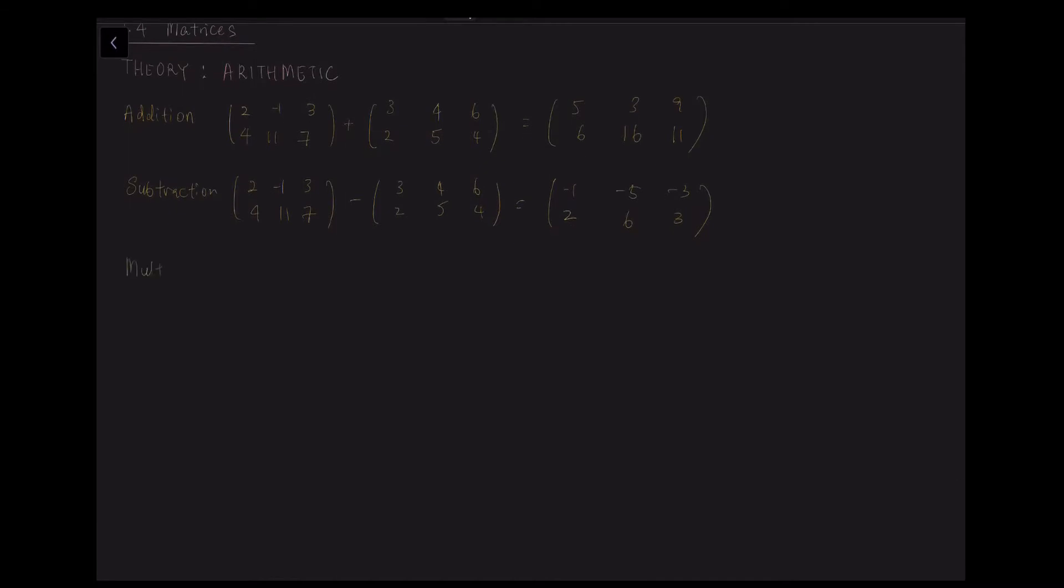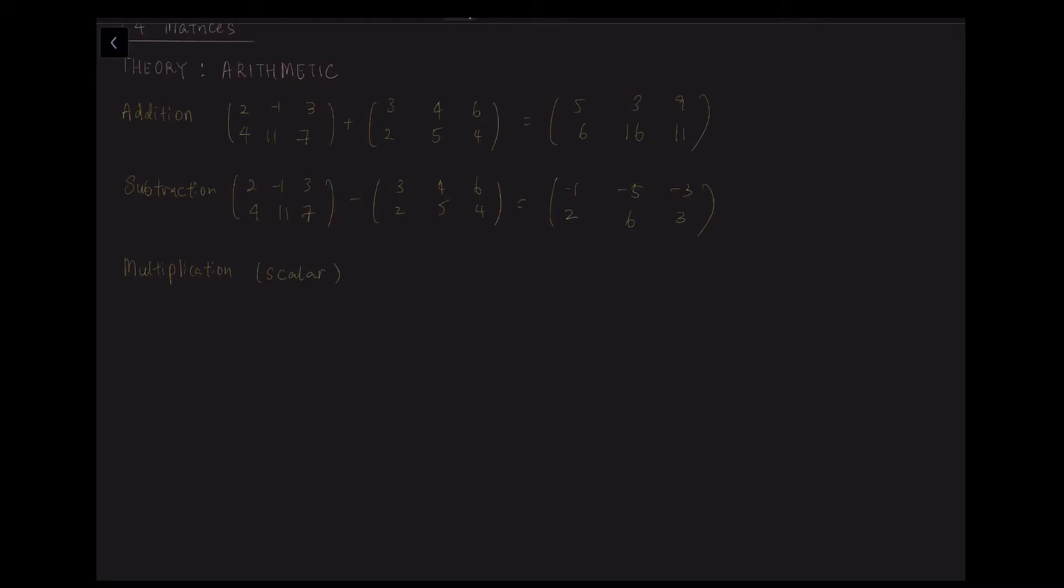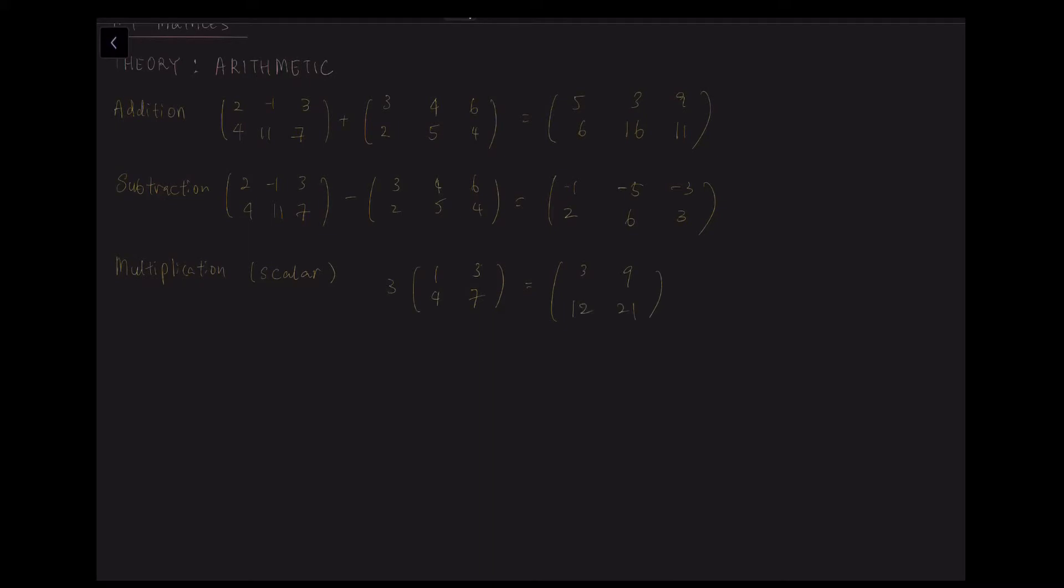The third one is multiplication. So for scalar, it is just, let's say in this example, 3 times each of the components inside. So we get these four numbers.